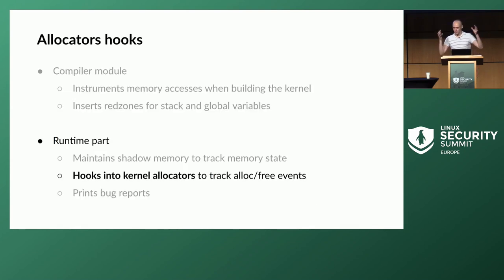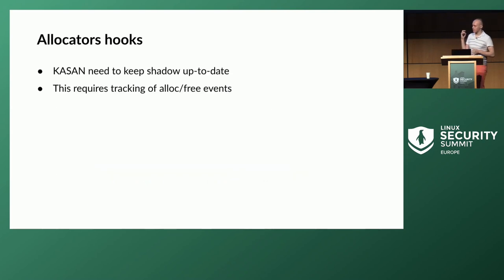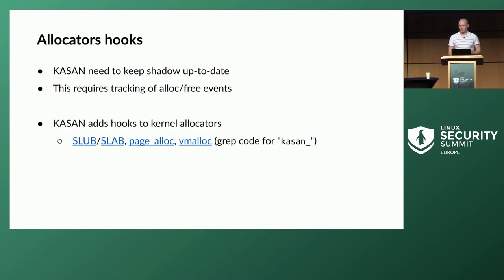It works similarly for n-byte accesses where n is less than 8 — just a few more checks to account for the alignment within the 8-byte slot and the number of bytes accessed. At this point we have shadow memory and compiler checks. But the kernel keeps allocating and freeing memory all the time, and KASAN should keep track of that by updating the shadow memory whenever something happens.